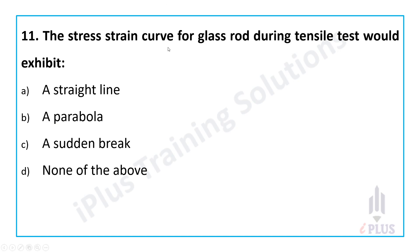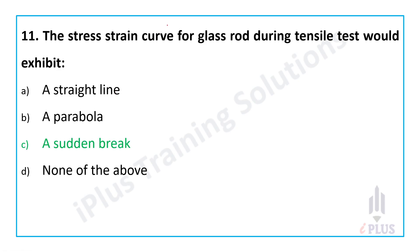The stress-strain curve of a glass rod during a tensile test — glass is a brittle material, keep that in mind. The stress-strain curve will be: a straight line, a parabola, a sudden break, or none of the above. The answer is sudden break — the material fractures at this point.